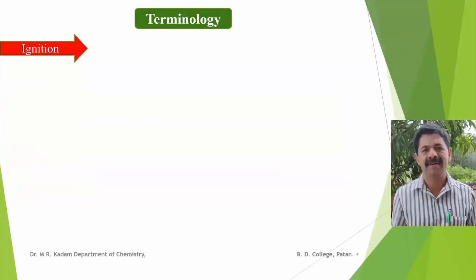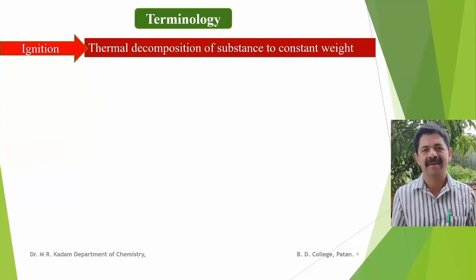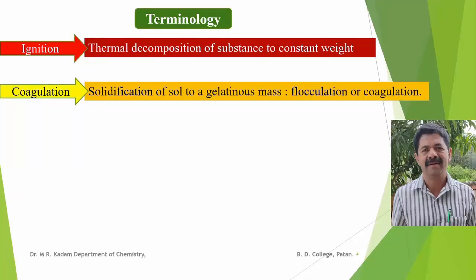The next term is ignition. Ignition is the thermal decomposition of the substance to a constant weight compound. Coagulation: in coagulation, the fine suspended particles from the colloidal solution aggregate or get coagulated to form the gelatinous mass. That is, the solidification of sol to the gelatinous mass is called coagulation or flocculation.